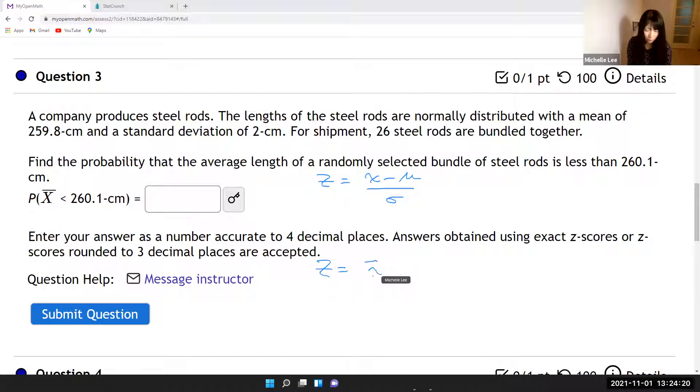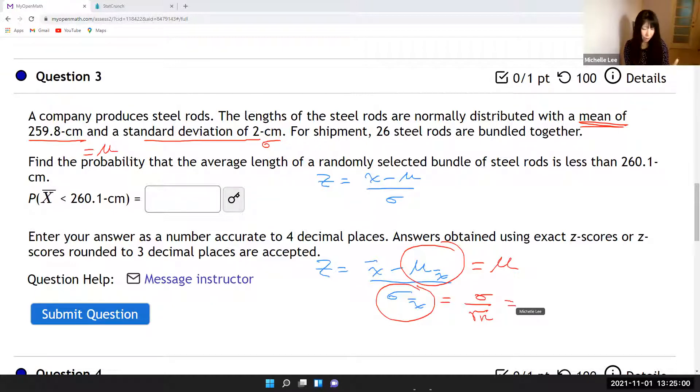So we're going to use z-score is x bar minus mu sub x bar over sigma sub x bar. Then in the class we learned why mu sub x bar is the same as mu. And sigma sub x bar, we have sigma over square root of n. So mu in this case, the mean is here, this will be mu and this will be standard deviation. Then sigma sub x bar, which is sigma over square root of n. So sigma is 2 over square root of n and it's 26 in this case, so 26. Then we get this number is 0.3922.